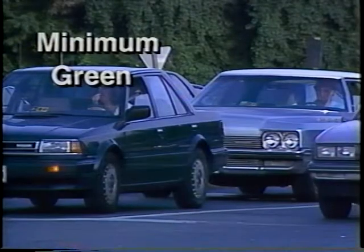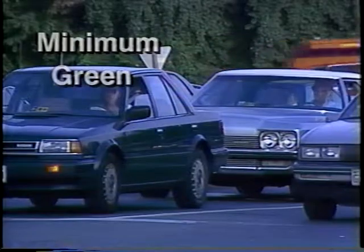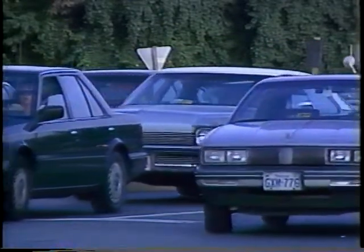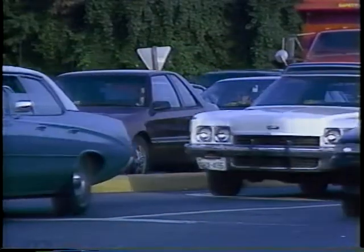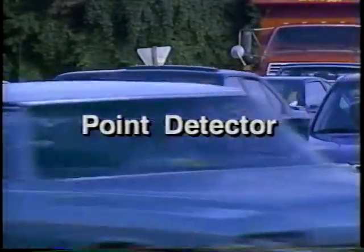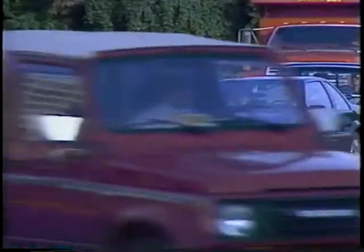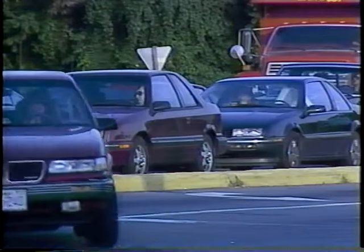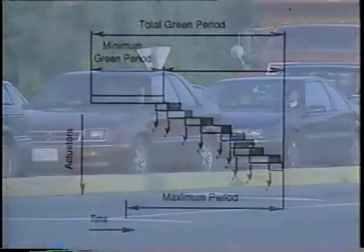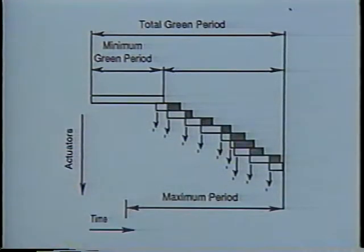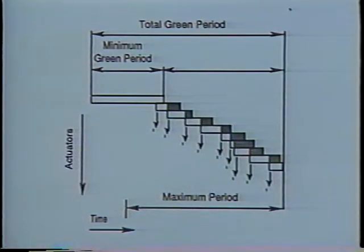The minimum green interval is the amount of time a detector allows for a stopped vehicle to accelerate and move into the intersection. When a point detector such as a six-by-six-foot loop detector is used, the minimum green interval allows a vehicle stopped between the detection point and the stop line to comfortably move into the intersection. Presence detectors with loops ending at the stop line require a different timing approach; the minimum green interval can range from zero seconds for a turn lane requiring a quick response to a longer period of time for straight-through vehicle movements.